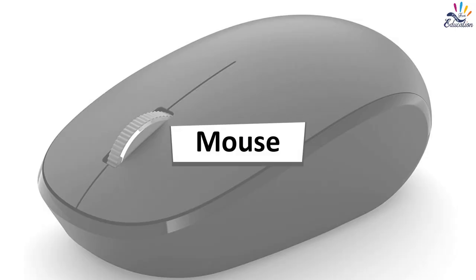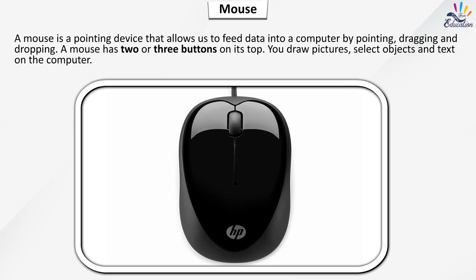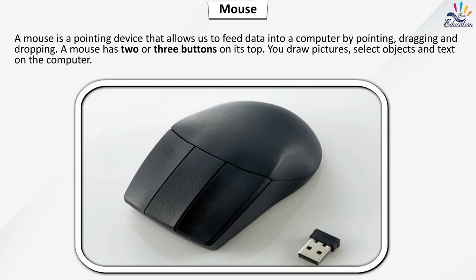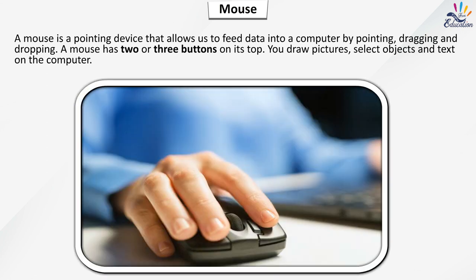Mouse. A mouse is a pointing device that allows us to feed data into a computer by pointing, dragging and dropping. A mouse has two or three buttons on its top. You draw pictures, select objects and text on the computer.